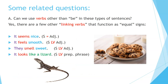Some related questions. Can we use verbs other than 'be' in these types of sentences? Yes. There are a few other linking verbs that function as equal signs. It seems nice — subject equals adjective. It feels smooth — subject, linking verb, adjective. The linking verb serves as an equal sign. They smell sweet — subject, linking verb, adjective. It looks like a lizard — subject, linking verb, prepositional phrase.